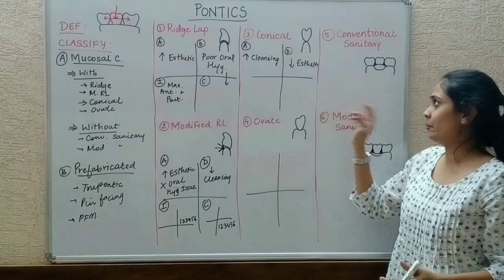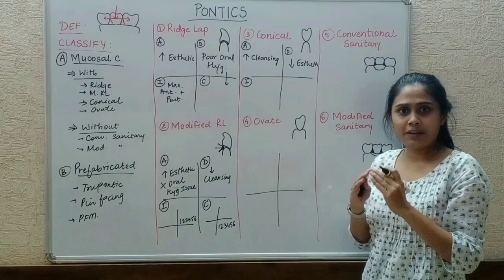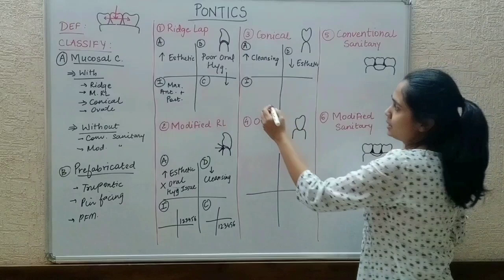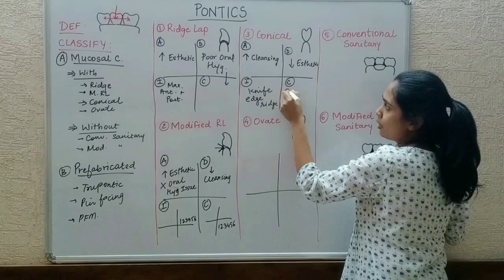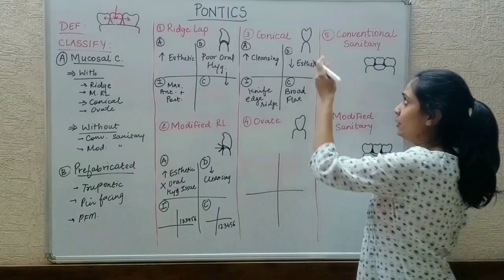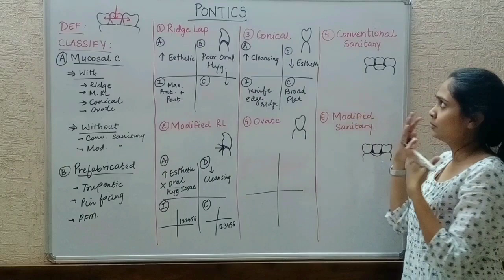For indications: whenever there is a knife-edge ridge, we can give a conical pontic, because these provide point contact which suits a knife-edge ridge. The contraindication is that when we have broad and flat ridges, we should not give a conical pontic — because giving a point contact on a broad flat ridge is not appropriate.